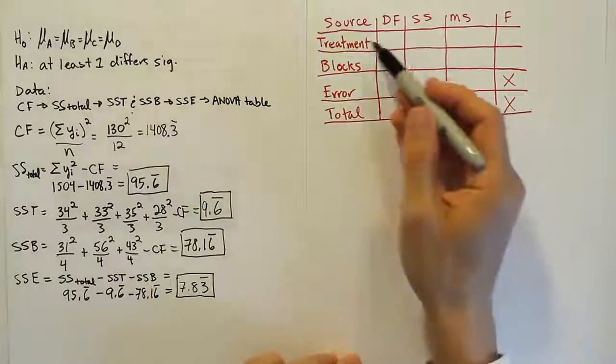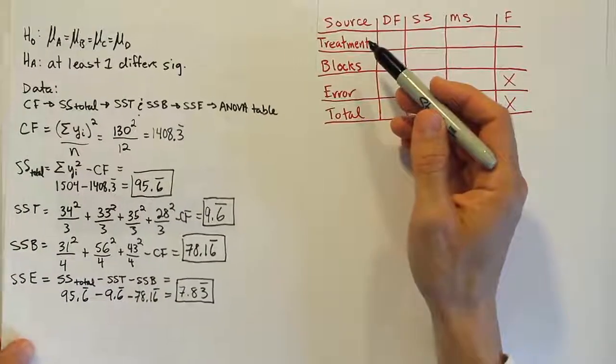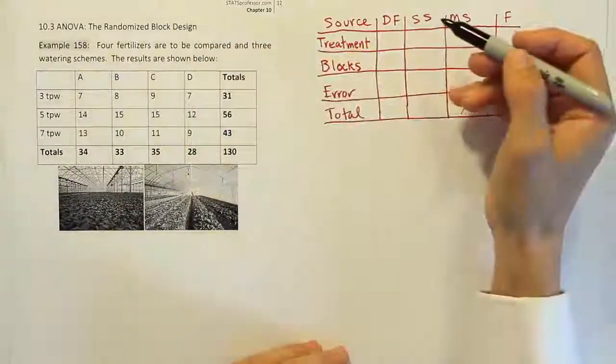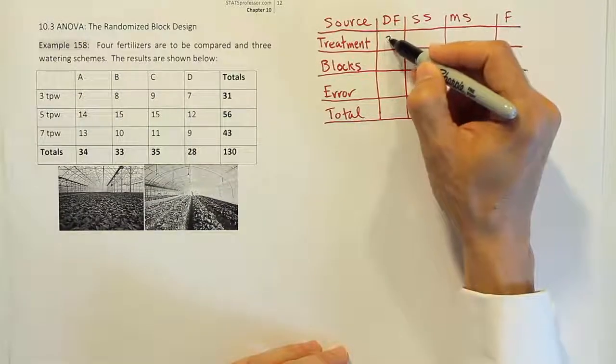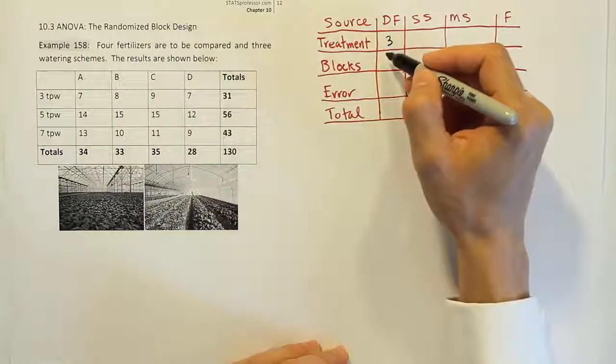So, degrees of freedom for treatments, remember there were, if you look at our results from our experiment, there were 1, 2, 3, 4 fertilizers, so the degrees of freedom is 3. For blocks, there was 3 blocks, so the degrees of freedom is 2.